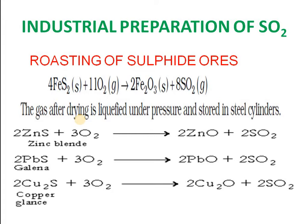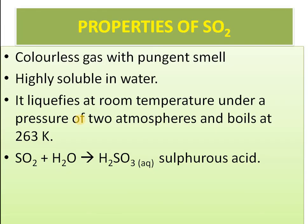Apart from iron sulfide ore, we can use zinc blende, galena, or copper pyrites depending on availability. Properties: sulfur dioxide is a colorless gas with a pungent smell, highly soluble in water. It liquefies at minus 10°C under a pressure of 2 atmospheres and boils at 263 Kelvin.